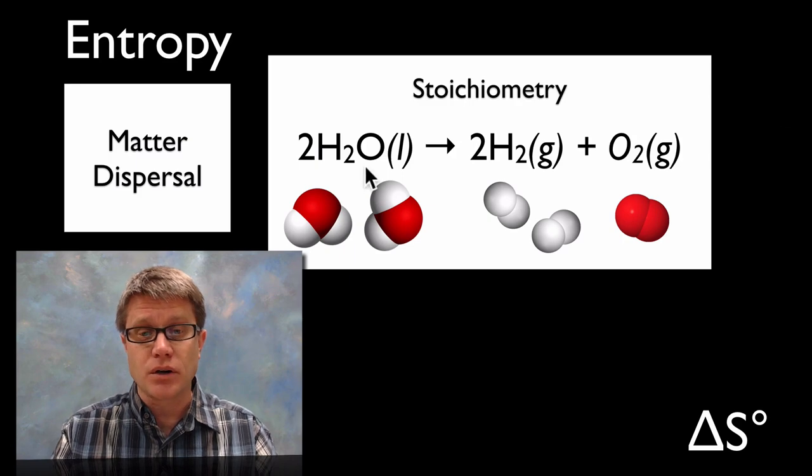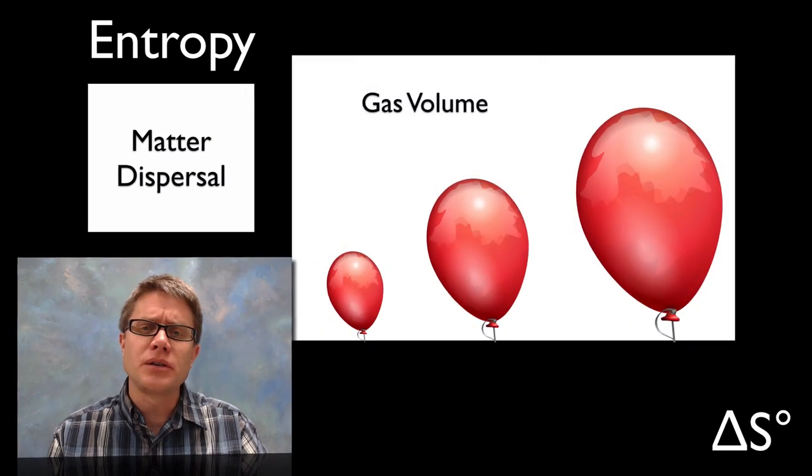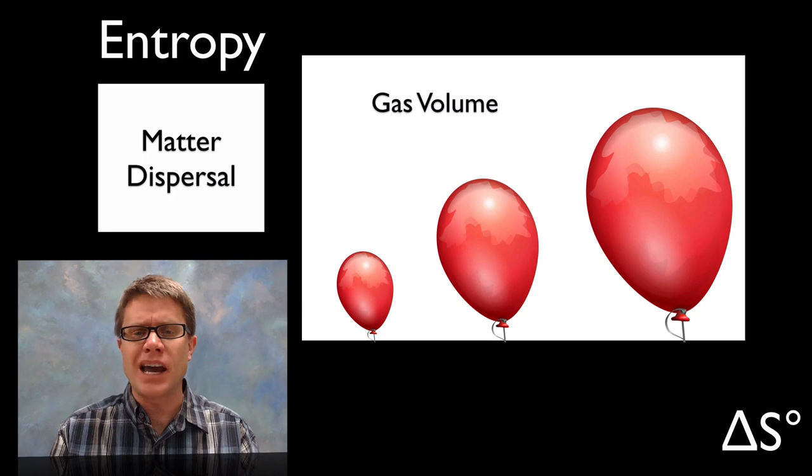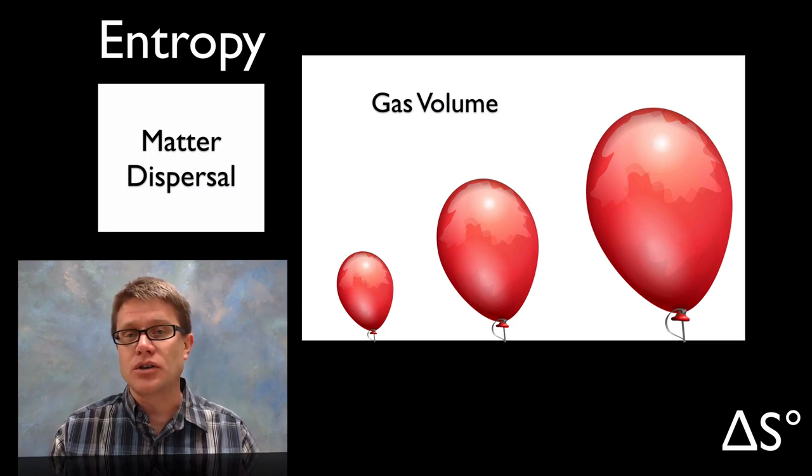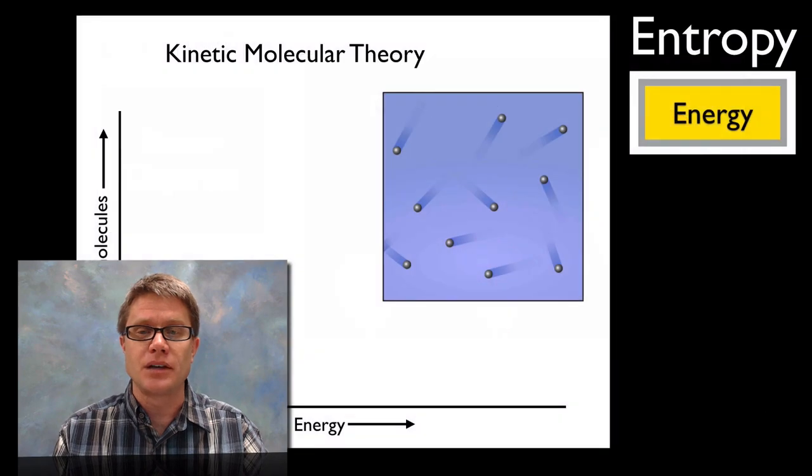Now there's another clue here as well. We're going from a liquid to gases. And so we really are increasing the entropy of this system. Now let's look at gas volume. As we increase the volume of a gas, so if we have a known quantity of that gas, as the volume gets larger and larger and larger, the matter is spreading apart. And so we're going to have a delta S that's going to be a positive value.